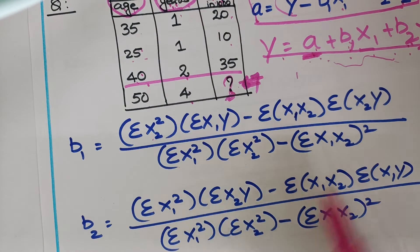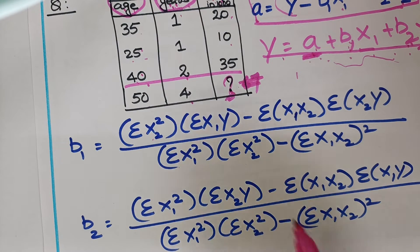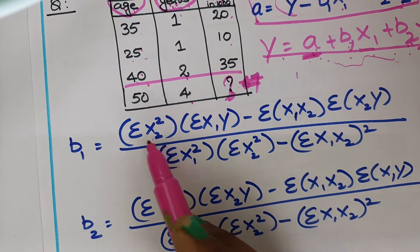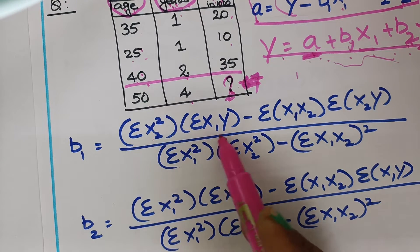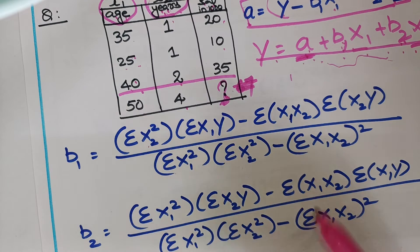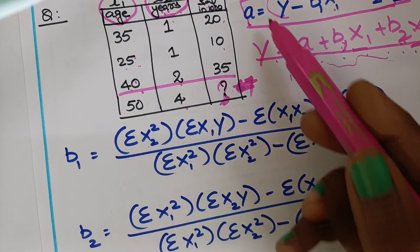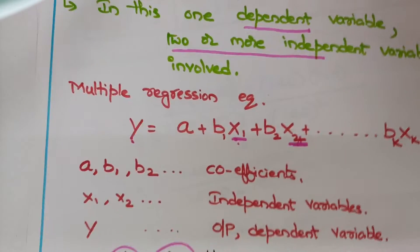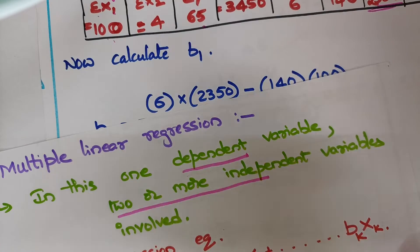b1 is calculated using its formula, and b2 is calculated using its formula. You need to calculate summation x2-squared, summation x1·y, and so on. After all calculations, you apply these values into the formulas to get the y value.